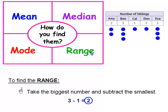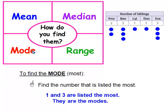To find the range in the set of numbers, you take the biggest number — in this case it's 3 — and you subtract the smallest number — in this case it's 1. So 3 minus 1 is 2. And then the last one is the mode. To find the mode, or the number listed the most, you just look at the data, and you can see that 1 and 3 are both listed more often than any other number. So 1 and 3 are the modes.